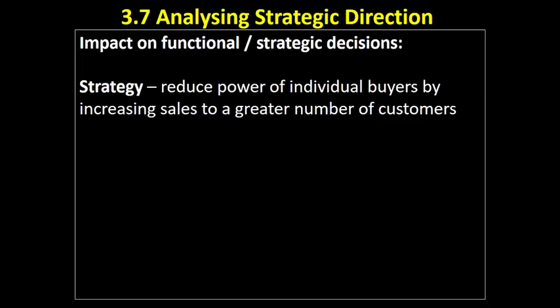So what's the impact on functional and strategic decisions? The strategy needs to be to reduce the power of individual buyers by increasing sales — selling to a greater number of customers and spreading our risk. Even if we do our job to the best of our ability and satisfy our individual customers, what happens if they go broke or other circumstances arise? We want to make sure we're spreading our risk by selling to the greatest number of customers possible, so that each customer has less power over us.